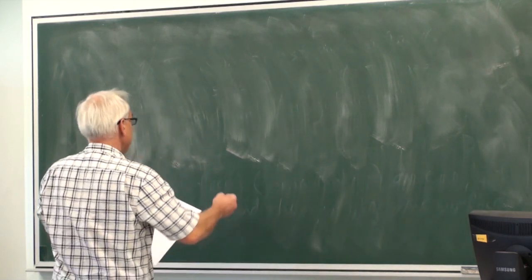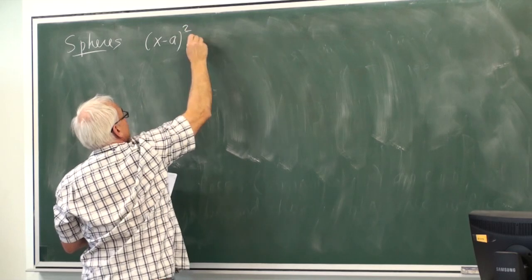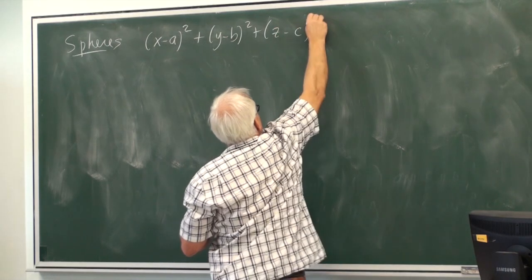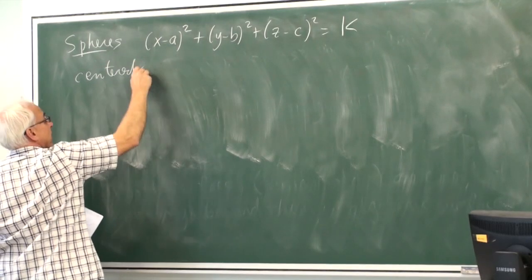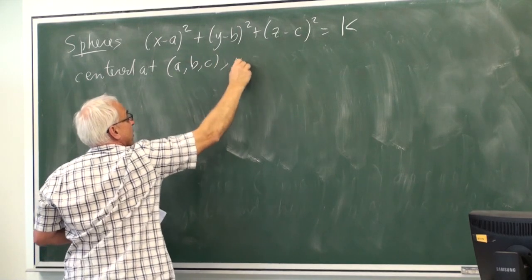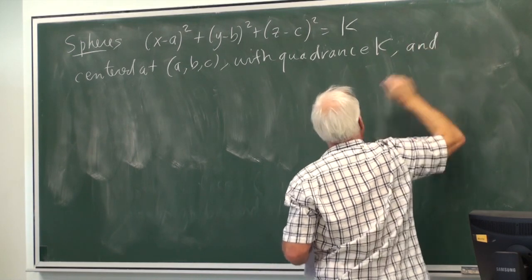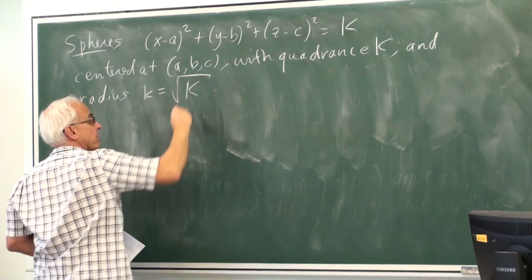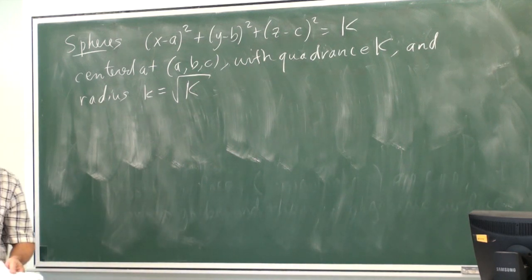After the planes, the next simplest kind of surface is the sphere. Spheres are all given by formulas generalizing the unit sphere: (x−a)² + (y−b)² + (z−c)² = K. This is the sphere centered at the point (a, b, c) with radius √K.